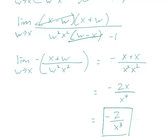Another way of writing this is minus 2x to the minus 3. But either answer is correct.